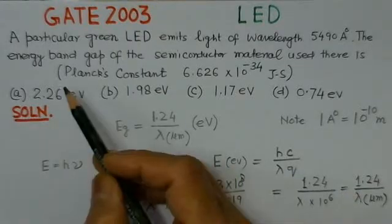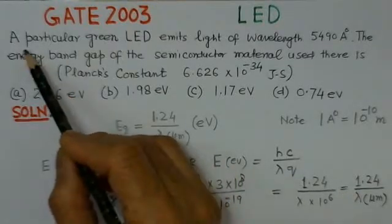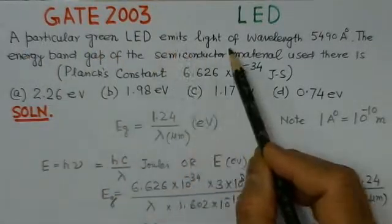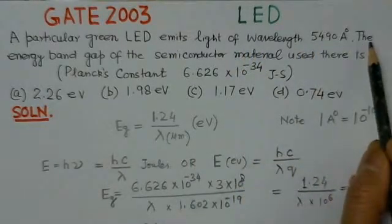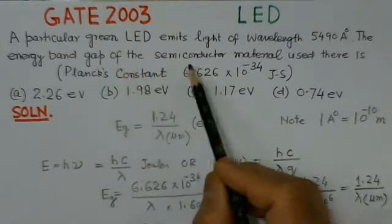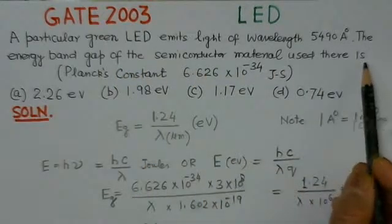We can read through the problem. The problem says a particular green LED emits light of wavelength 5490 angstrom. The energy band gap of the semiconductor material used there is...